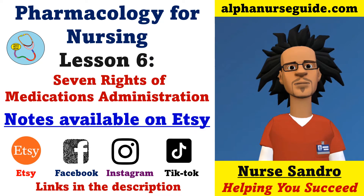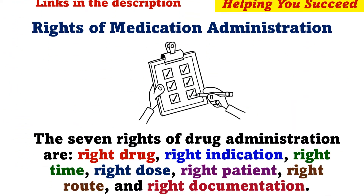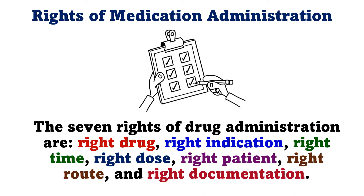Let's get started. The 7 rights of drug administration are: right drug, right indication, right time, right dose, right patient, right route, and right documentation.